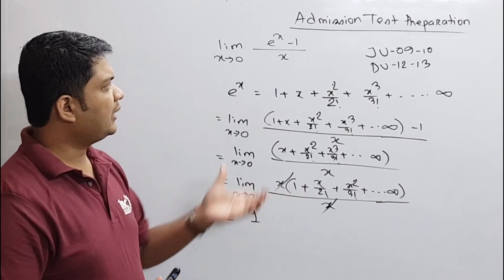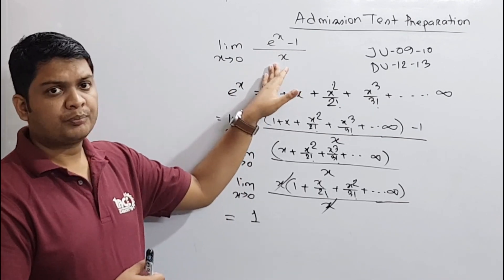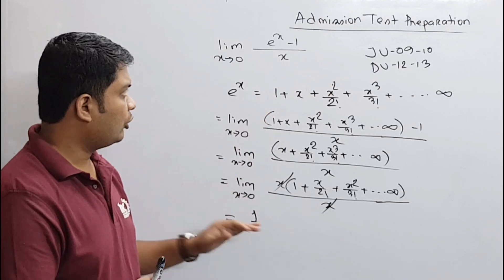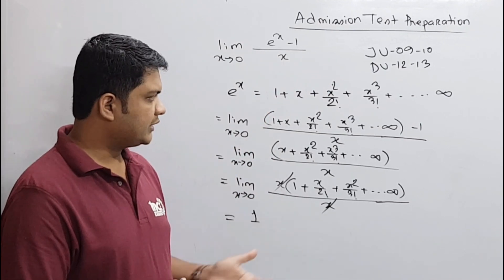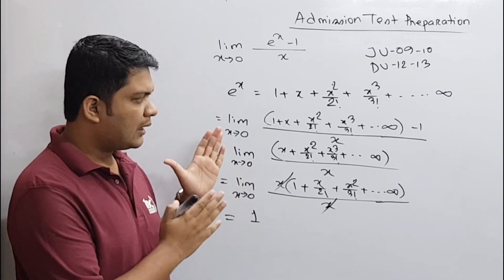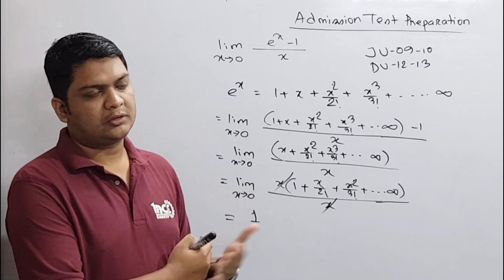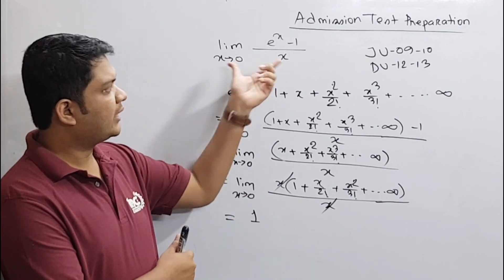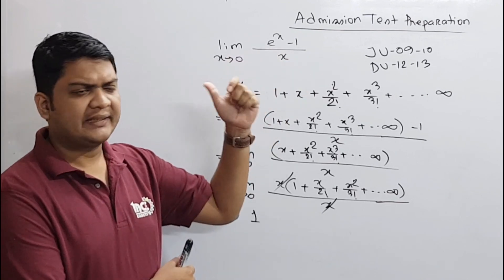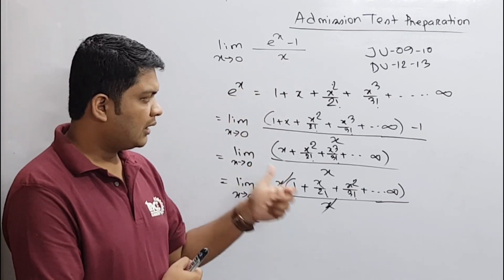The answer is e to the power x minus 1 divided by x. This is the concept, and we can solve the question. The answer is 1. If you have any questions about this video, please comment. Check out the basic video. In the next video, we will solve more problems. See you in the next video.